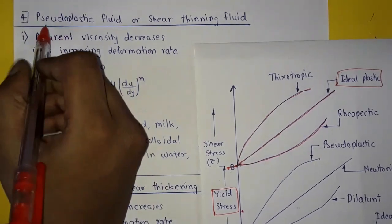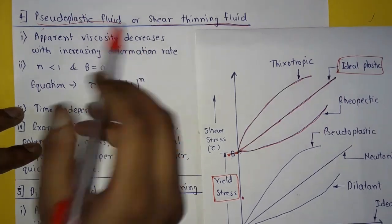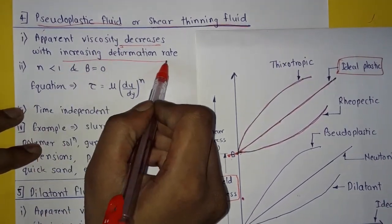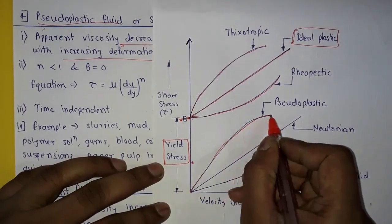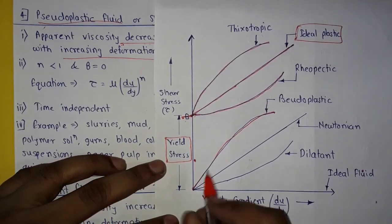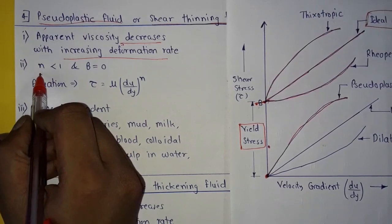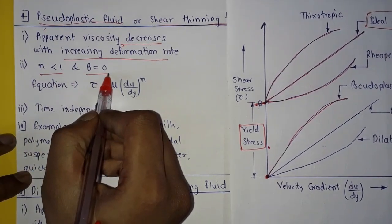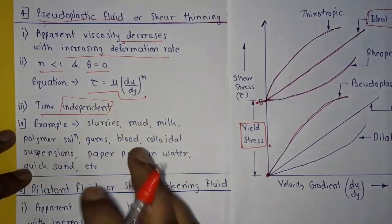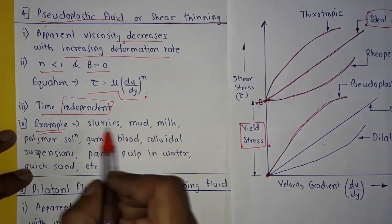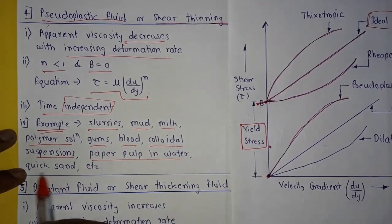The fourth type is pseudo-plastic fluid or shear thinning fluid. In this case, apparent viscosity decreases with increasing deformation rate. It is represented as a curve starting from the origin on the shear stress versus velocity gradient graph. Here, n is less than 1 and b is equal to 0, so the equation becomes: tau equals mu times (du/dy)^n. It is a time-independent fluid. Examples are slurries, mud, milk, polymer solution, gums, blood, colloidal suspensions, paper pulp in water, quicksand, etc.